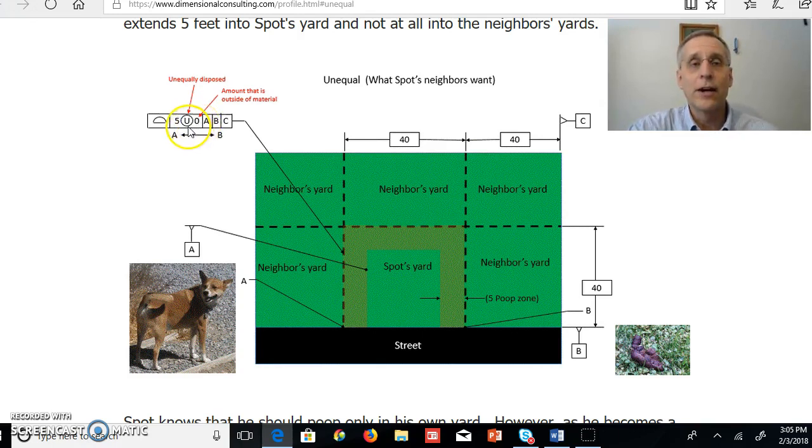Now, the number that follows the unequally disposed symbol refers to how much the tolerance zone is outside the part or outside of the material. So in this case, the tolerance zone is five wide, it's unequally disposed, and none of it is outside the material or outside Spot's yard, so it's all inside Spot's yard.